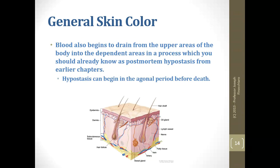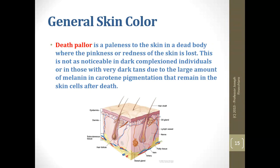Blood drains via hypostasis, which can actually start happening in the agonal period. Be aware of gravitation — not just the lower areas where blood settles, but if the body is at an angle, blood fluid is going to pour into the lowest area. Death pallor is the pale skin in a dead body where pinkness or redness is lost. It's less noticeable in darker complexions because melanin and carotene basically hide it.